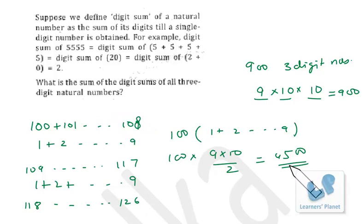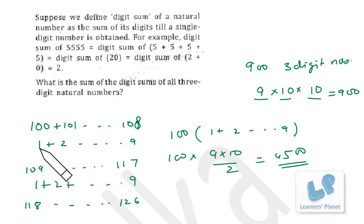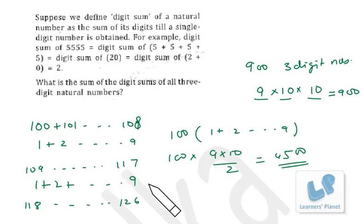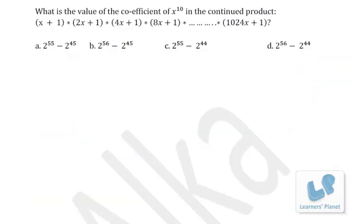The answer is 4500. We are taking digital sums — 1, 2, up to 9 — so the sum of digital sums of all three-digit natural numbers is 4500.